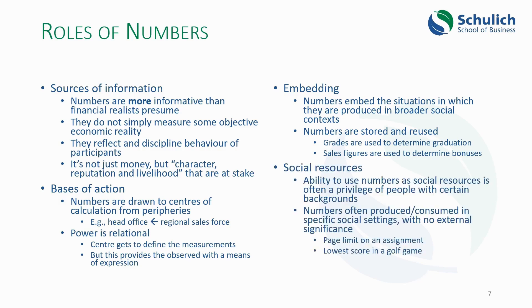The fourth role of numbers is that they act as social resources. Vollmer makes an important point that the ability to use numbers as social resources often depends on having a certain privilege, background, training, wealth, or prestige — it's not an evenly distributed capacity. He also notes that numbers are often produced and consumed in very specific social settings with no external significance. In our class, a limit on assignment pages is very important within the class context but nobody else cares. In a golf game, whoever gets the lowest score wins — important in that situation, but irrelevant outside it. The ability to use numbers as social resources is constrained by both your social capacity and the context in which you're operating.